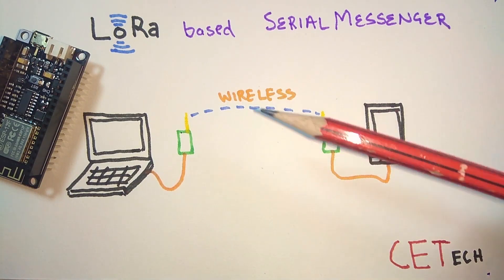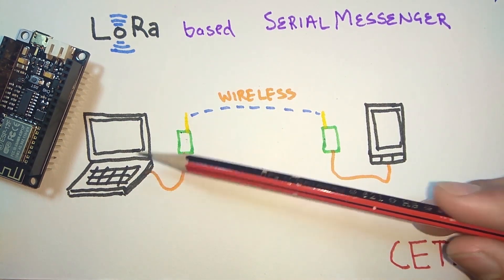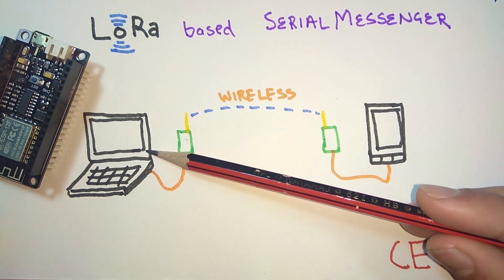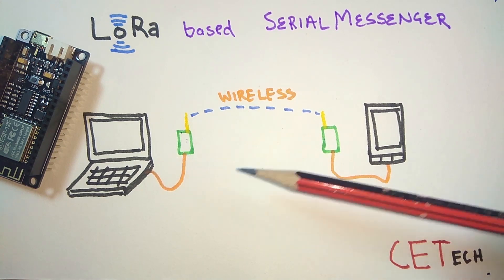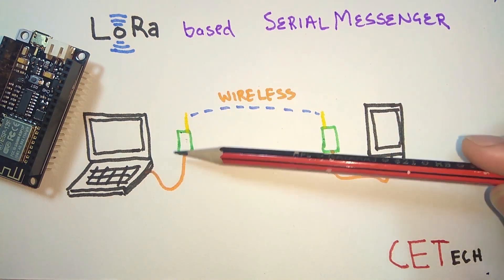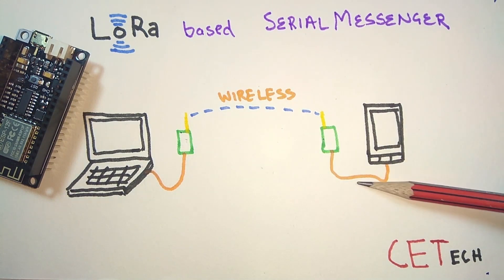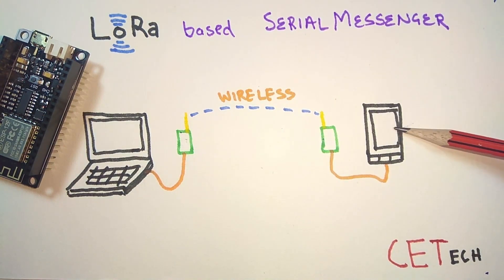Our circuit will be over here. One part will be connected to a laptop, mobile phone, or computer using a USB cable, and the other one will also be connected to any device. For my instance, I'm connecting one node to a laptop and the other node to a mobile phone.